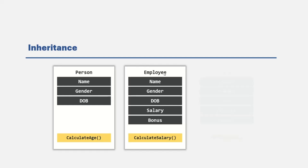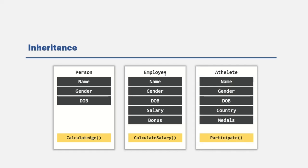And let's say we also want to create another class called Athlete. There also we are going to have the name, gender, and date of birth property, and the calculateAge method. Along with these, we also want a country property representing which country that athlete represents, the number of medals won, and a method called participate to check in which competitions this athlete has participated. So if you notice, if we create these three classes like this, we have three common properties and one common method — the calculateAge method. If we create these classes separately, we are basically rewriting the same code.